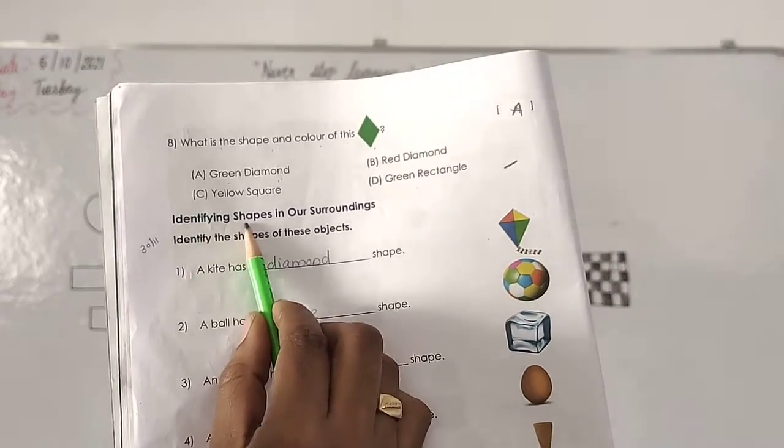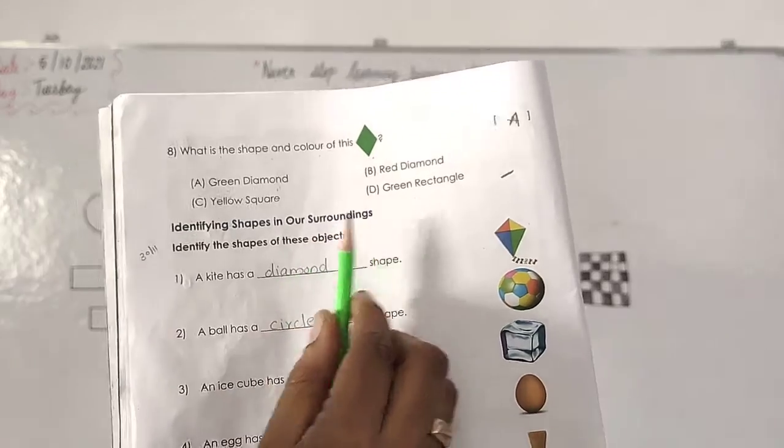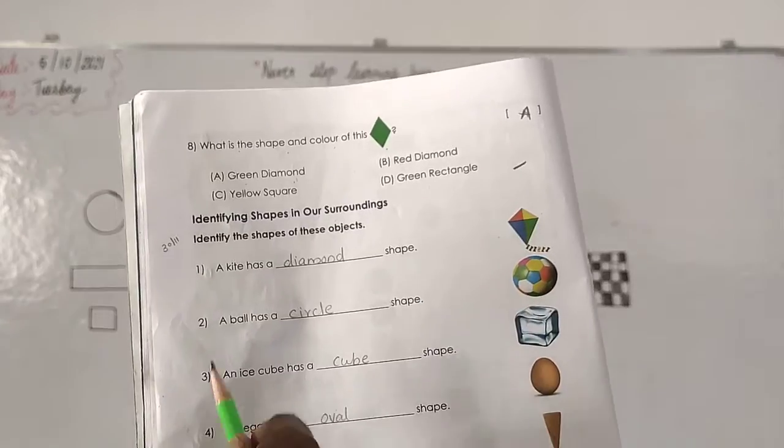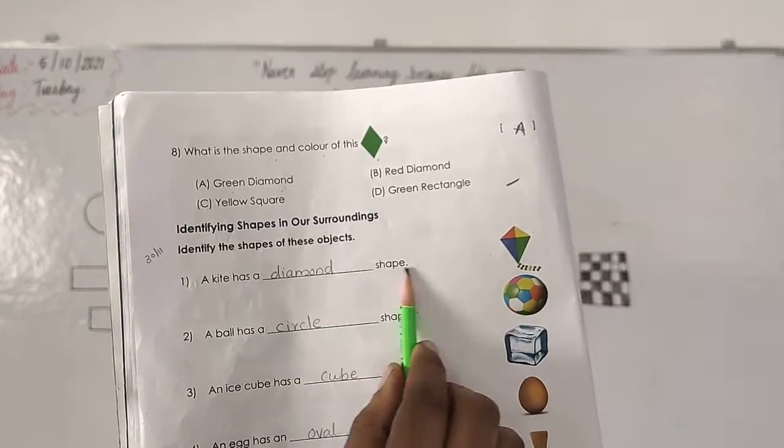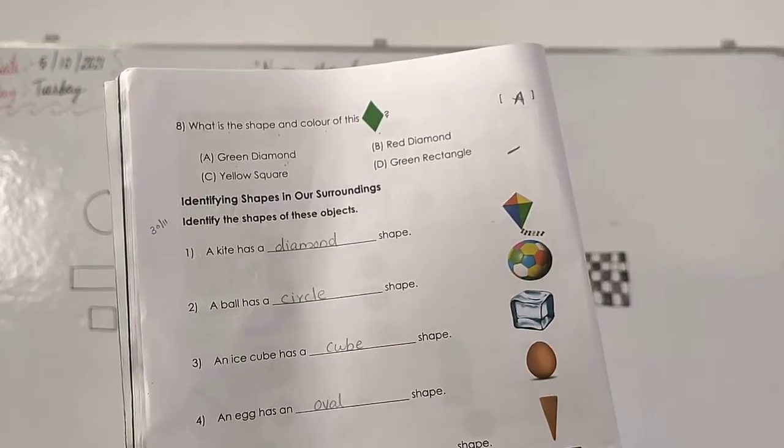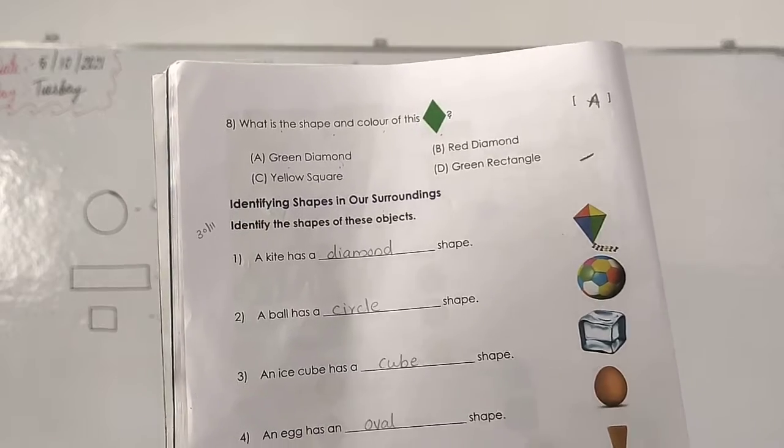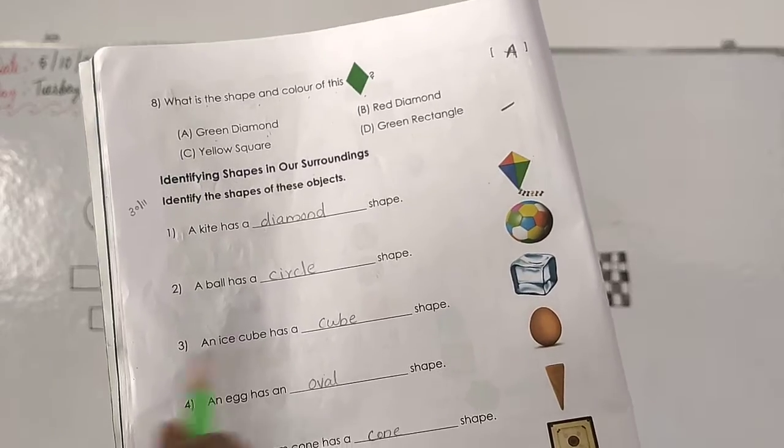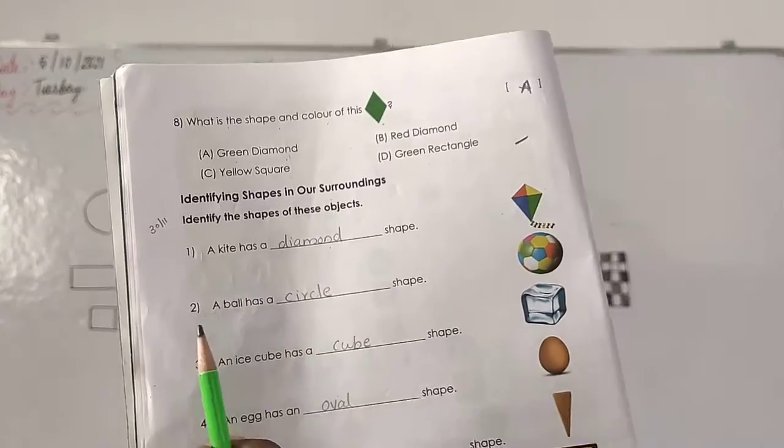Then next step. Identify the shapes. Identify the shapes of these objects. You want to identify which shapes. A kite has a dash shape. Kite has a dash shape. Which shape? Diamond shape. Yes. Write down diamond. D-I-A-M-O-N-D diamond. Then next step.